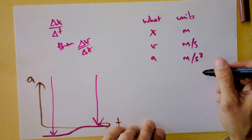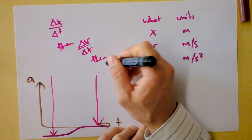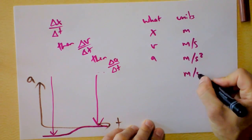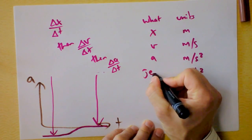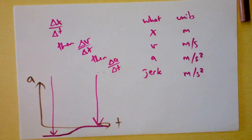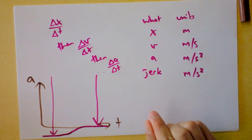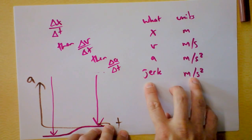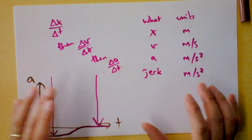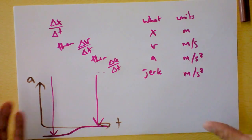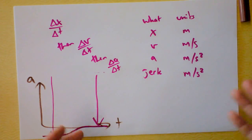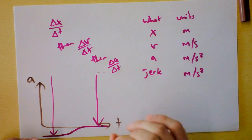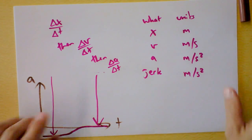This is clearly a pattern of dividing by time. So what if we take Delta acceleration over Delta T? That would have units of meters per second cubed, and it's called jerk — a real scientific term. It's the feeling you get when a car brakes unexpectedly or a subway car starts or stops, shifting your balance. That's jerk. We'll summarize everything in another video — bye!